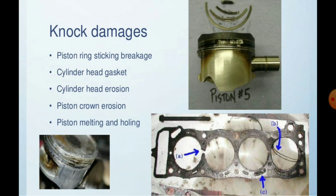Various damages occur due to knocking. On the piston, there is warping and piston rings sticking or breakage. You can see the piston rings that are broken, shown by yellow arrows on the screen. The cylinder head gasket gets warped and totally damaged. Cylinder head erosion, corrosion, and damage to the crown top of the piston are also visible. The melting of the piston and holes in the piston crown are the general problems caused by knocking.